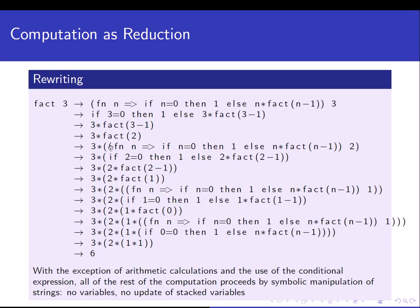We do it exactly the same way as before. `fact 2` becomes: replace fact with its body — fn n, if n equals 0 then 1, else n times fact of n minus 1 — and we send 2 as an argument. When we send 2, we drop the lambda and get: if 2 equals 0, then 1, else 2 times fact of 2 minus 1. Since 2 is not equal to 0, the else part is true, so it becomes 2 times fact of 1.